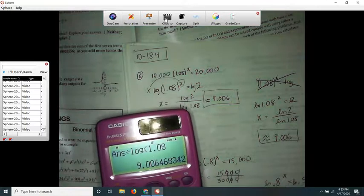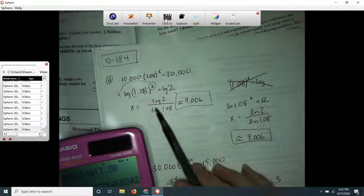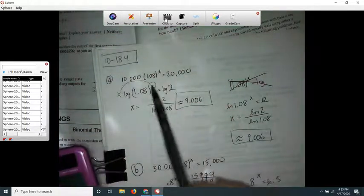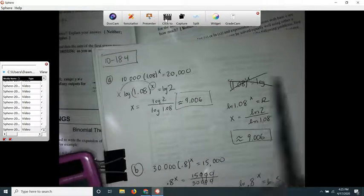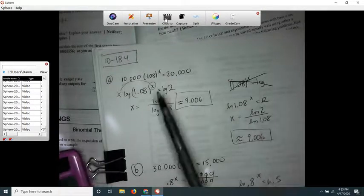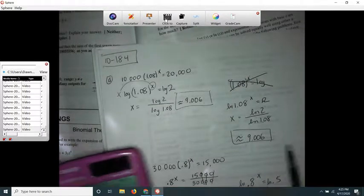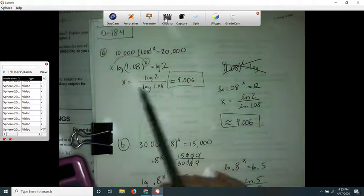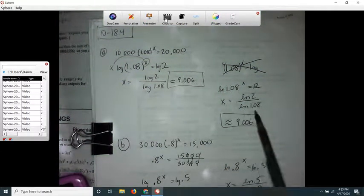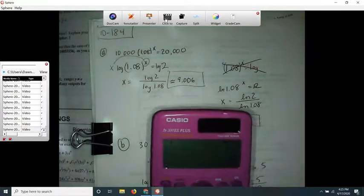If I just basically do that whole procedure, like solve it for x by dividing both sides by 10,000, and then if I ln both sides of the equal sign, then I would end up with something exactly like this, but it would just be ln 2 and ln 1.08. Here, ln 2 divided by ln 1.08 gives me the same exact thing.